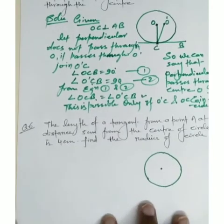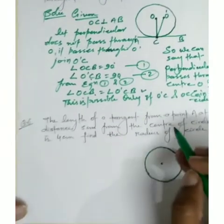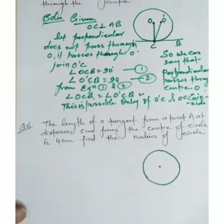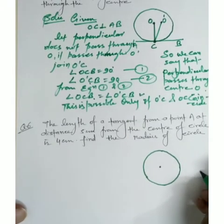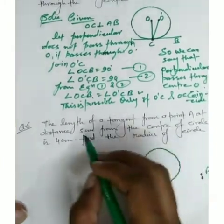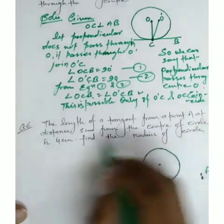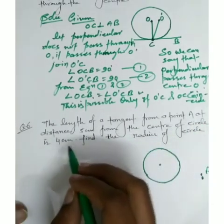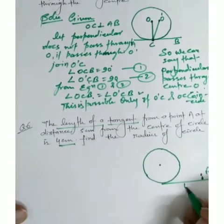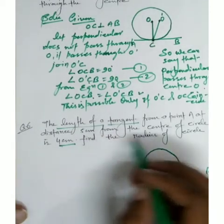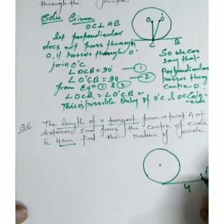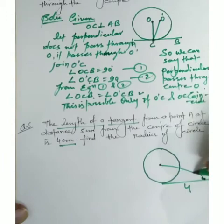Now we are going to solve question number six. It says: the length of tangent from point A at a distance of 5 cm from the center of the circle is 4 cm. Let this be point A. The length of the tangent from point A is 4 cm, and the distance from A to the center is 5 cm.